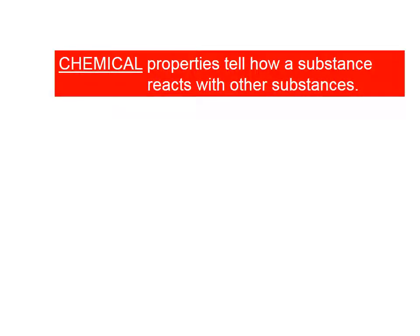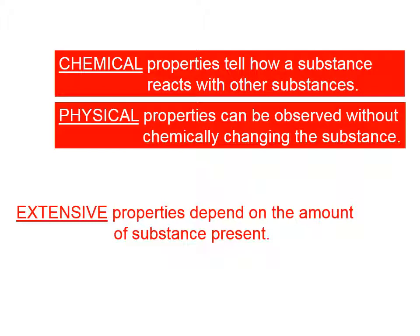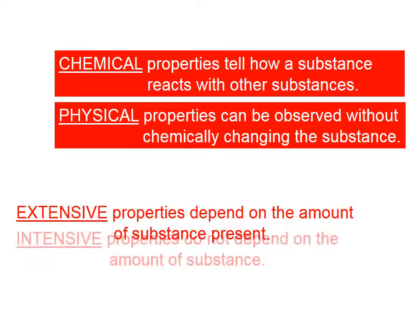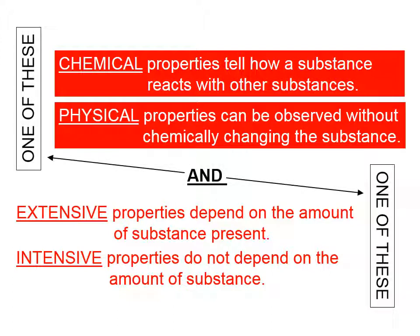Chemical properties tell how a substance reacts with other substances, as opposed to physical properties, which can be observed without chemically changing the substance. Extensive properties depend on the amount of substance present. Intensive properties do not depend on the amount of substance. All properties of matter we can classify as either chemical or physical, and furthermore, as extensive or intensive.